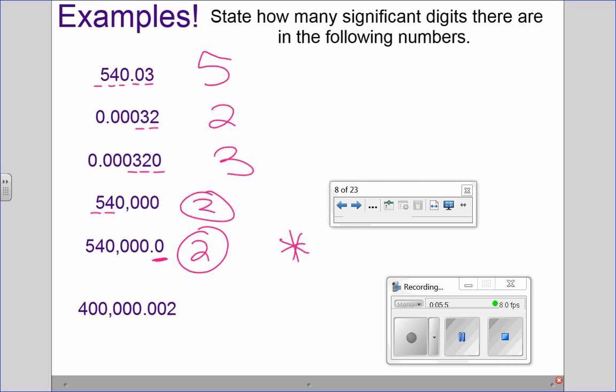I like this one. This has the non-zero, and then these are wedged between. So what did you go with for this one? Nine. One, two, three, four, five, six, seven, eight, nine. Yeah, I'd go with nine, too, because the zeros are wedged between non-zero digits. You always count them in that case.